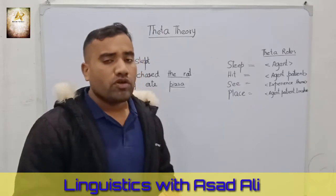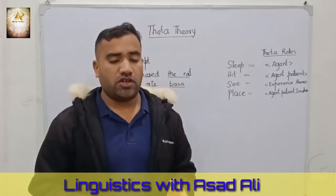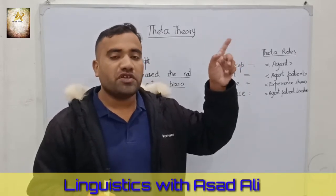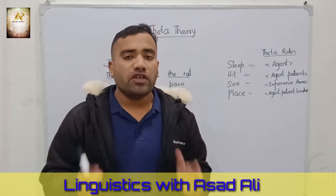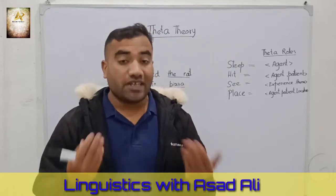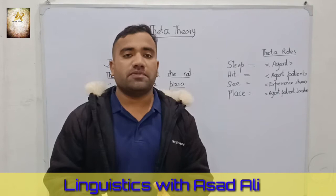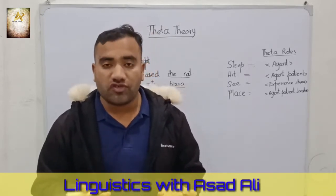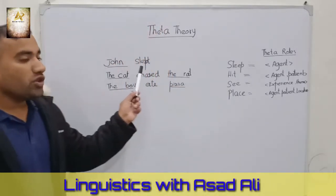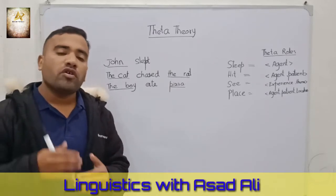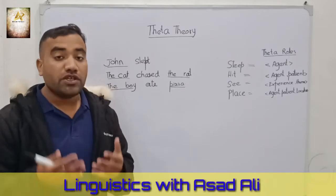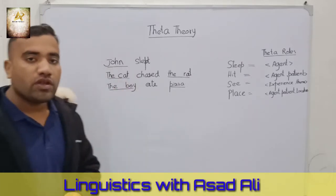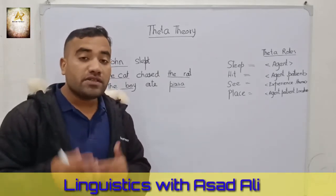When we speak English and observe languages in the world, we see different categories and different words. If you don't know what a category is, you can click the link and see my video on what categories are. When we look at syntactic structures, sentences, and phrases, we can observe examples. Our first example is 'John slept.' In this example we have two entities: one word and one noun.